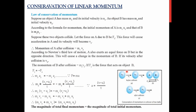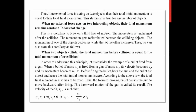This leads to the corollary of conservation of linear momentum: if no external force acts on two objects, the total initial momentum equals the total final momentum. When no external force acts, their total momentum remains constant. When two objects collide, the total momentum before collision equals the total momentum after collision — that is what conservation of linear momentum is all about.